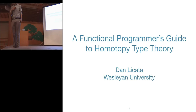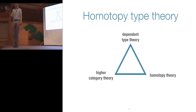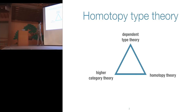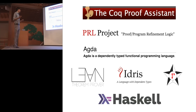What I want to tell you about today is this homotopy type theory project that I and many other people have been working on. This project is about connecting dependent type theory with two areas of mathematics: homotopy theory and higher category theory. I'll assume you know what dependent types are, since they appear in proof assistants like Coq, Agda, Lean, and programming languages like Idris, F*, and increasingly Haskell.